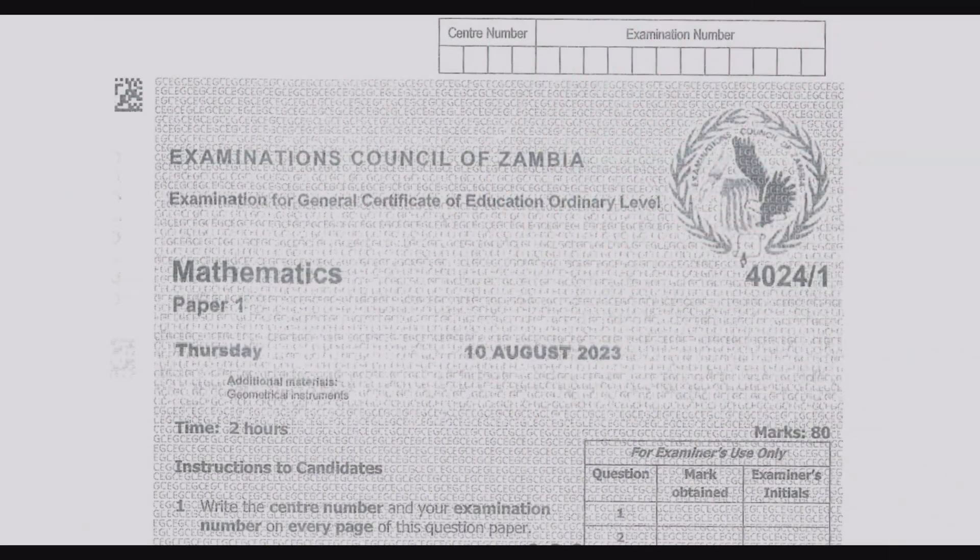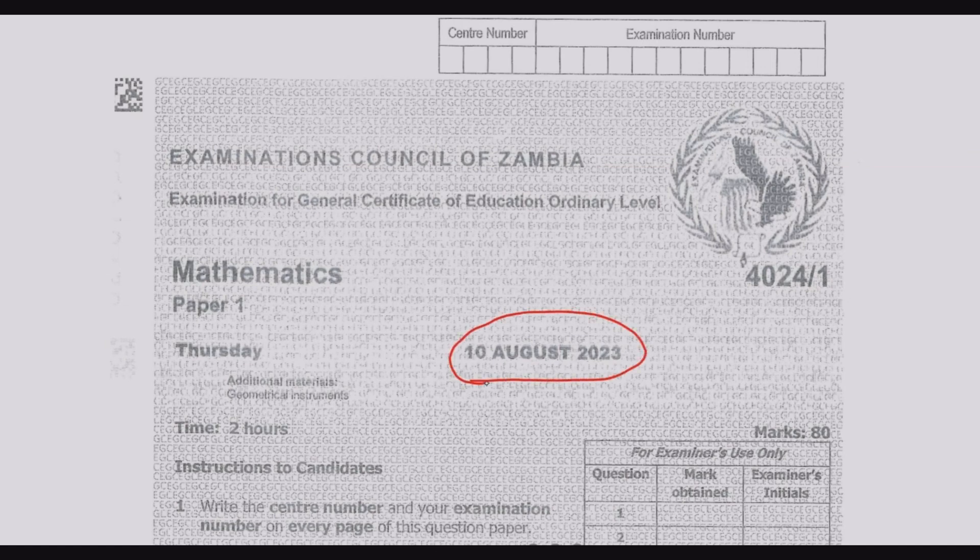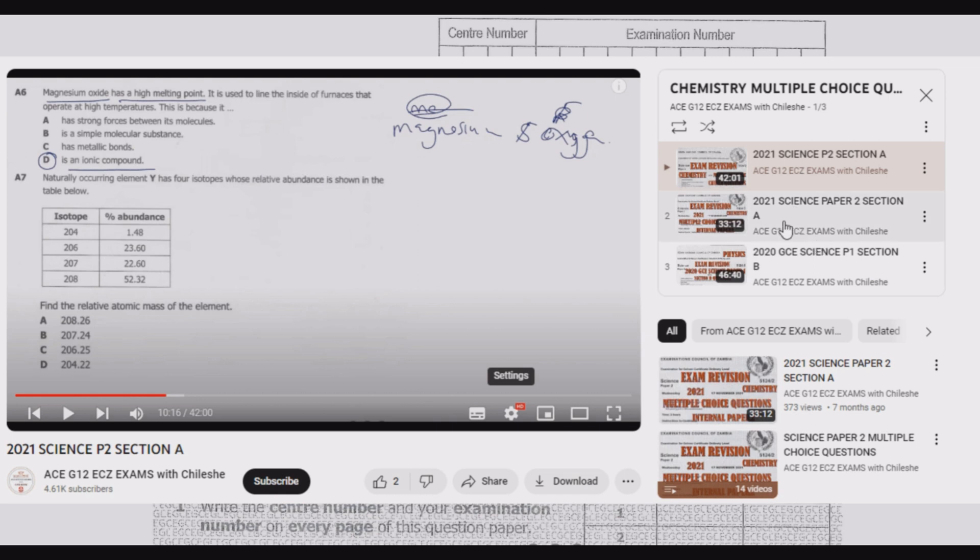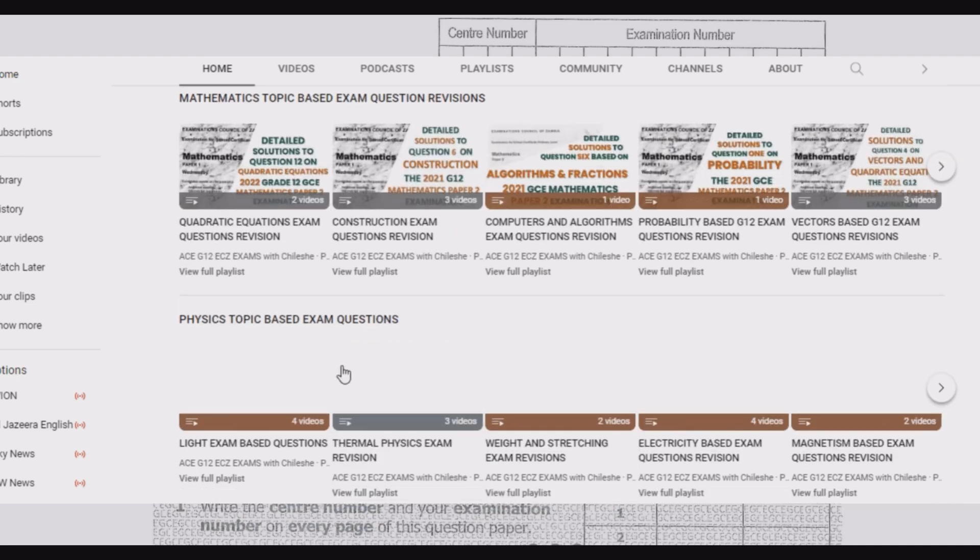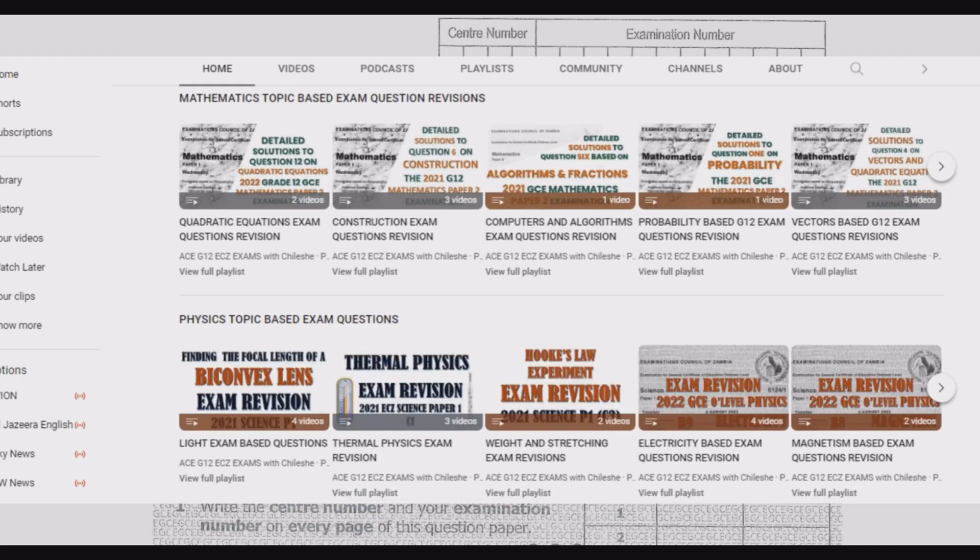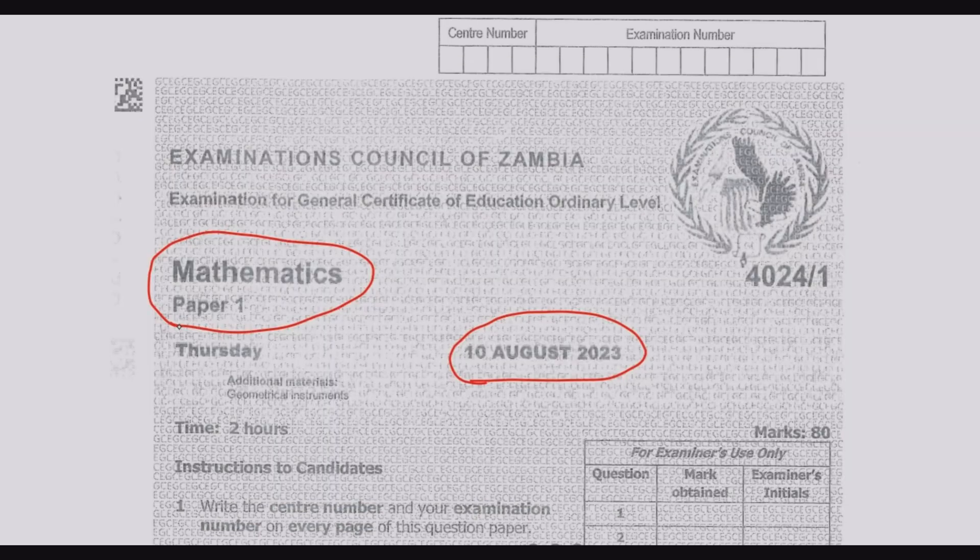Welcome viewers to another episode in a series focused on extensive revision of the August 2023 mathematics paper one. If you haven't seen other episodes, please go to our YouTube channel and check for the playlist that contains extensive revision of each and every question from this paper. Questions are grouped according to the paper and topics. This is important for you especially if you are struggling with a specific topic. You can find a series of questions from different papers as far as 2017. If you are new to this channel please consider hitting the subscribe button. If you find this video helpful please consider hitting the like button and share with your colleagues.